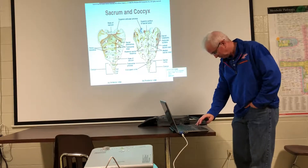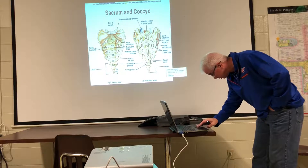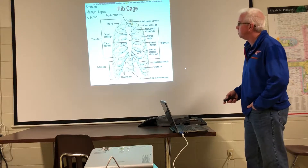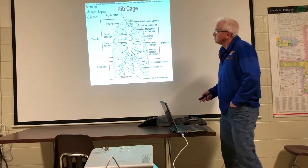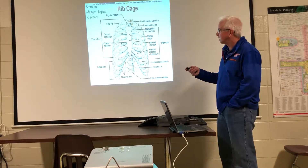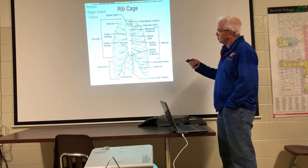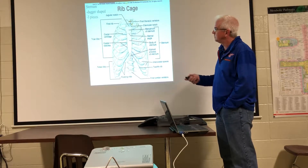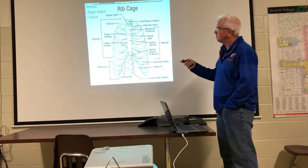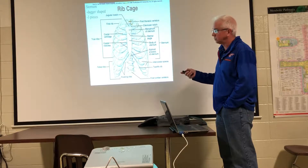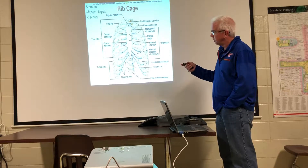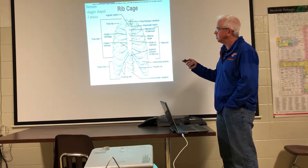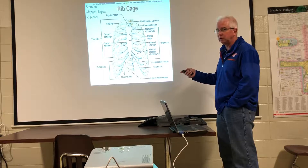Now let's go back up to the thoracic area and pick up the sternum. We talked about the facets for the heads and tubercles of the ribs. If you follow the articulation of the ribs around to the front, you can see that the ribs are attached to the sternum, which exists in three major pieces: the manubrium, the body, and the xiphoid process.